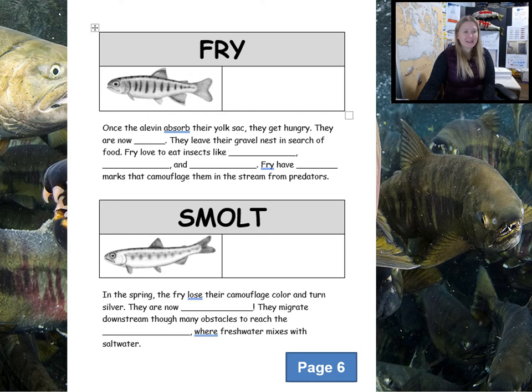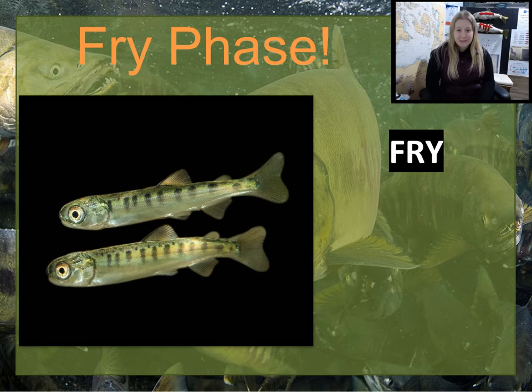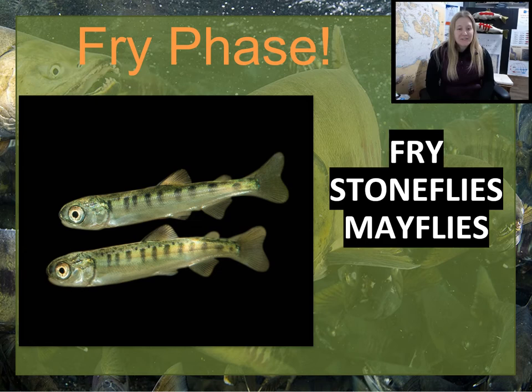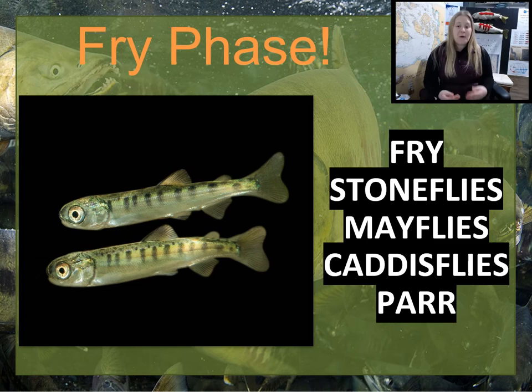Let's turn to page six of our life cycle book. We're going to fill in the blanks for the fry life stage first, then the smolt life stage. Once the alevin absorb their yolk sac, they get hungry — they are now fry. They leave their gravel nest in search of food. Fry love to eat insects like stoneflies, mayflies, and caddisflies. Fry also have par marks that camouflage them in the stream from predators. The fry stage is sometimes also called the parr stage because of these camouflage par marks.